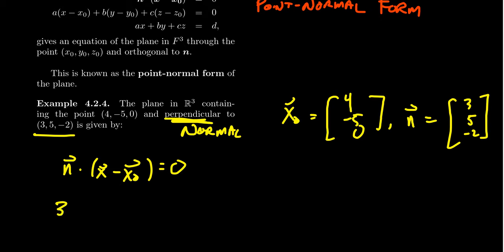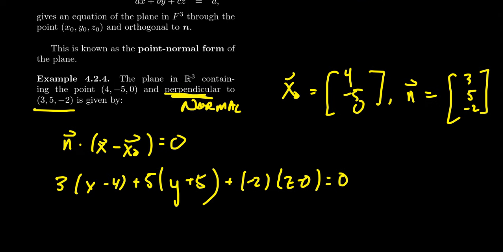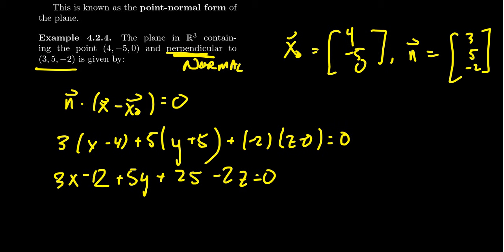Expanding it out, we should get 3(x - 4) + 5(y + 5), notice a negative minus negative five is a plus five, and then lastly we're going to get -2(z - 0) = 0. We just have to work to simplify this thing, distribute things through. We get 3x - 12, we're going to get 5y + 25, and then we're going to get -2z = 0. 25 take away 12 is 13. When you move that to the side, you get 3x + 5y - 2z = -13.